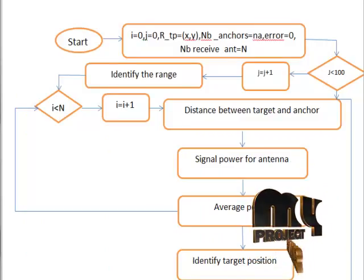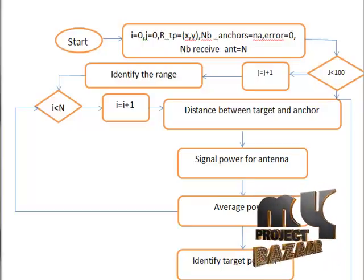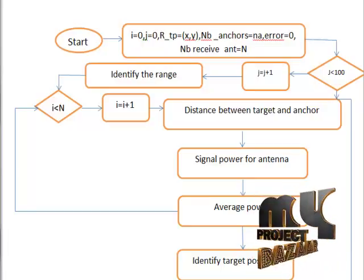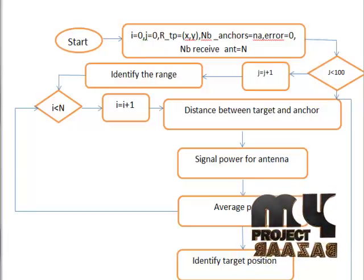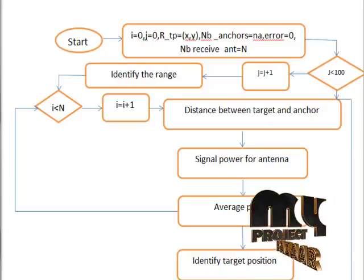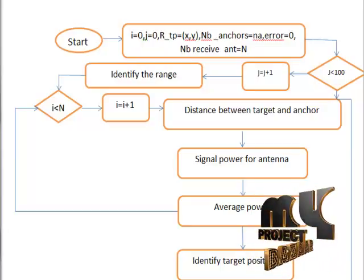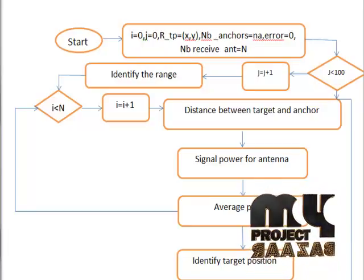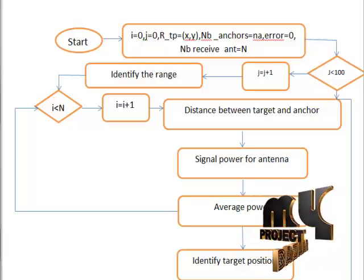Let us discuss the flow chart for this process. Here first range identification. There has been a wide range of research aiming at developing sensors with multiple antennas. Experimental results have been achieved to show the system requirements and feasibility.